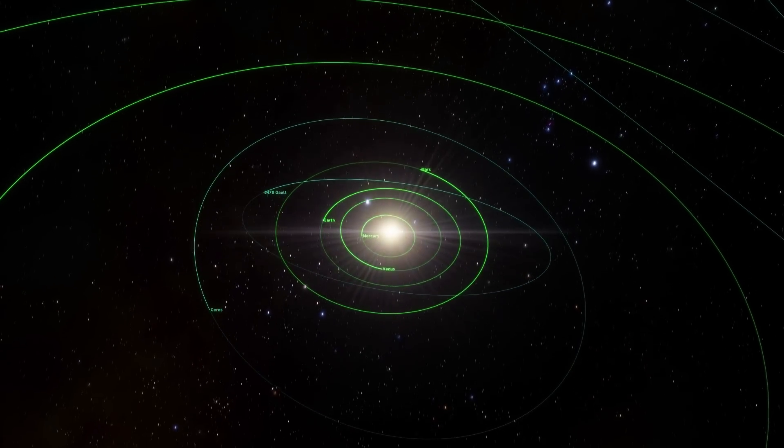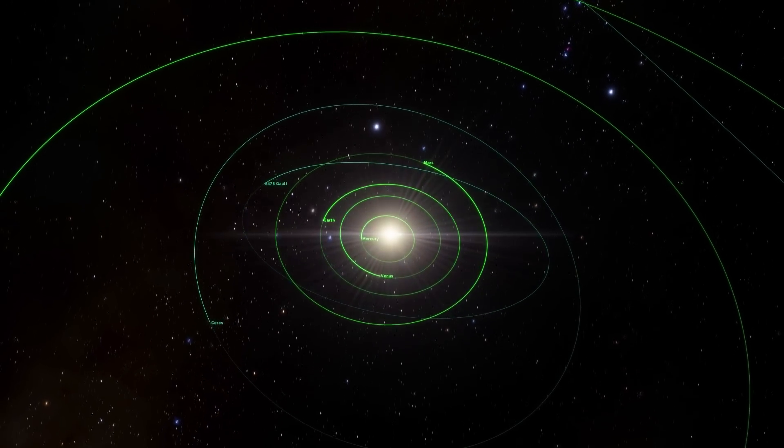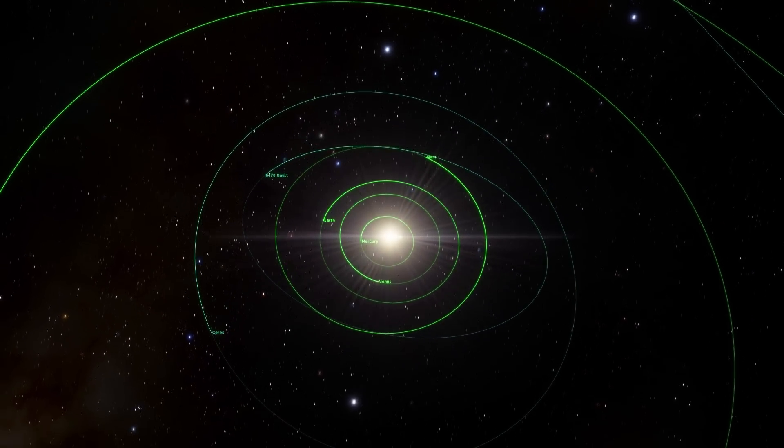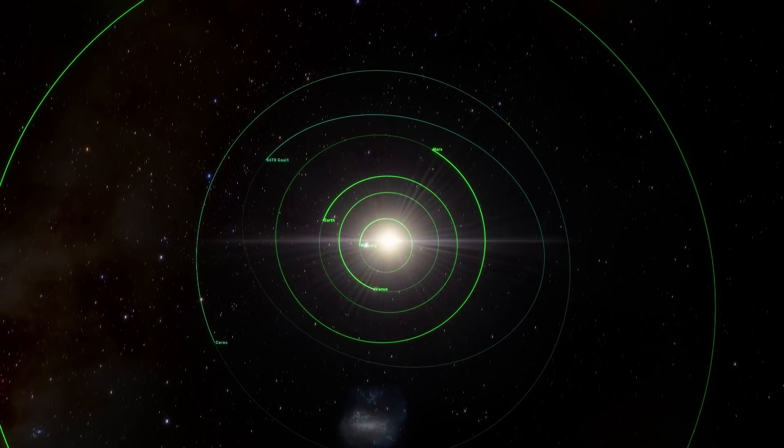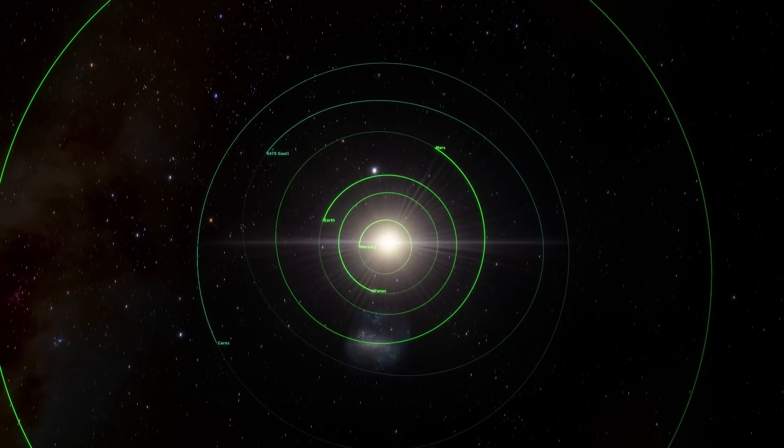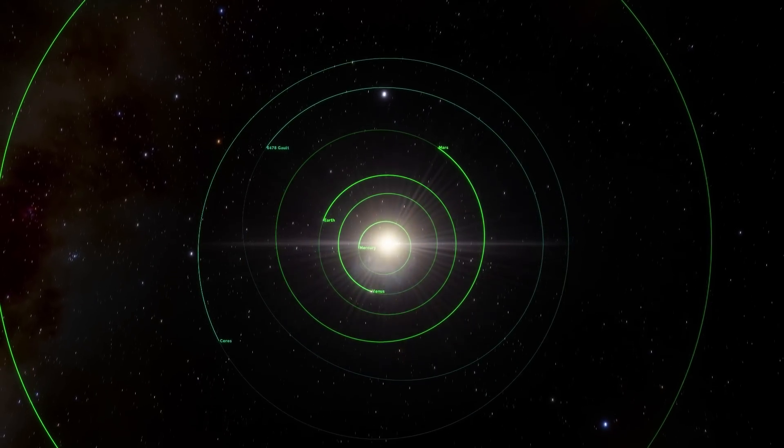Thanks to an impressive collaboration bringing together data from ground-based telescopes, all-sky surveys, and space-based facilities, including the Hubble Space Telescope, a rare self-destructing asteroid called 6478 Galt has been observed.